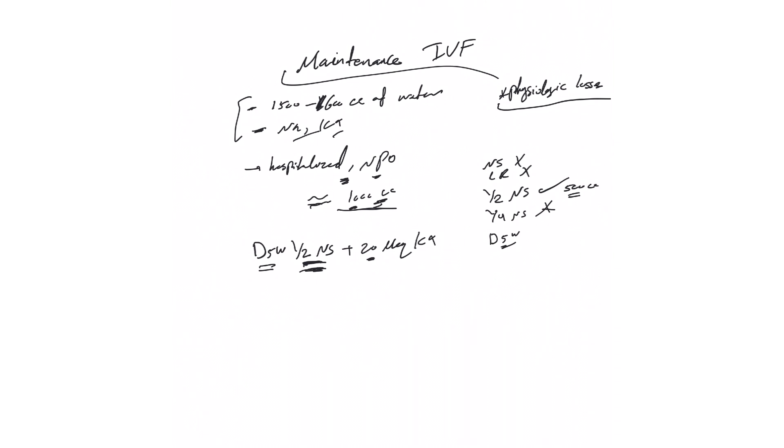Before that, the osmolarity of this total will be around 470 milliosmoles per liter, which means this is a hypertonic solution. But remember, D5W as soon as it's infused becomes like free water. So technically you just need to calculate the osmolarity of this. This will be around 174—154 of the half NS plus 20 of this—174 milliosmoles per liter. So it's a hypotonic solution.